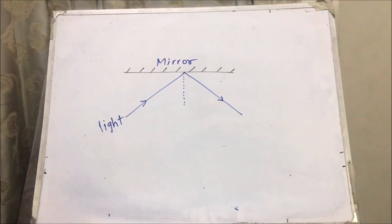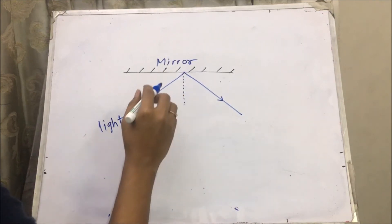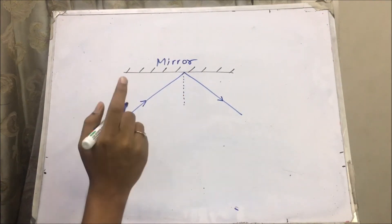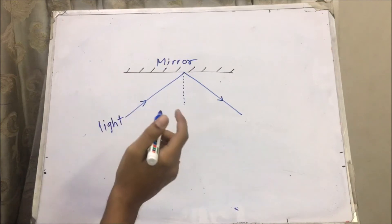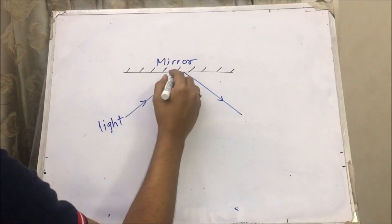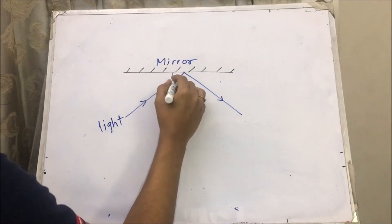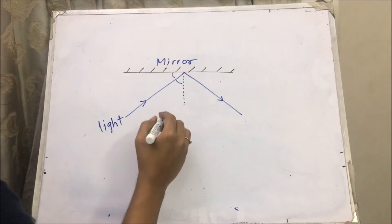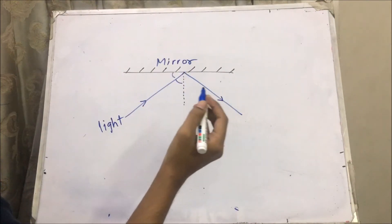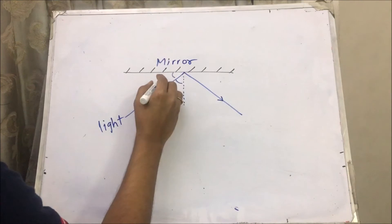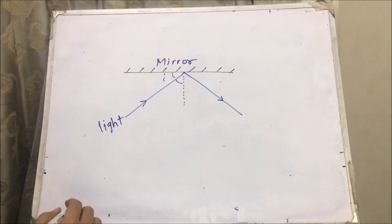The angle of incidence is the angle at which the light hits the mirror. Now you might ask that we can measure the angle of incidence in two ways. Why don't we measure the angle of incidence like this? This could be our angle of incidence — the angle with the mirror.